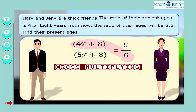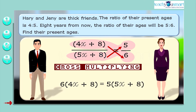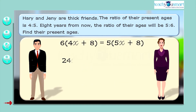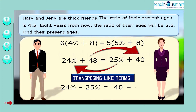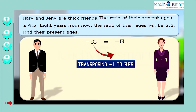Cross-multiplying: 6 multiplied by (4x + 8) equals 5 multiplied by (5x + 8). Transposing like terms we get 24x minus 25x equals 40 minus 48, so minus x equals minus 8. Transposing, x equals minus 8 divided by minus 1, therefore x equals 8.